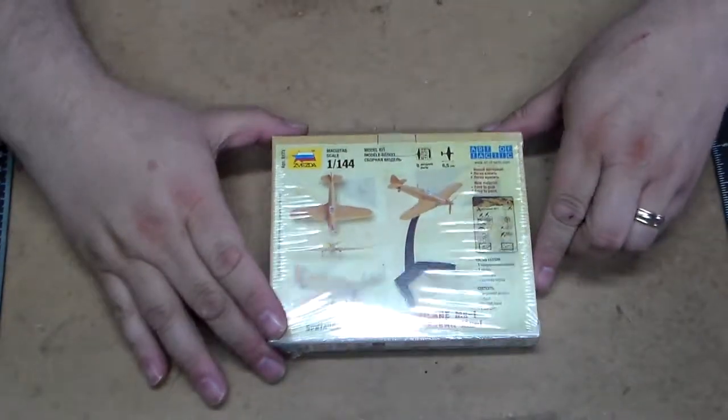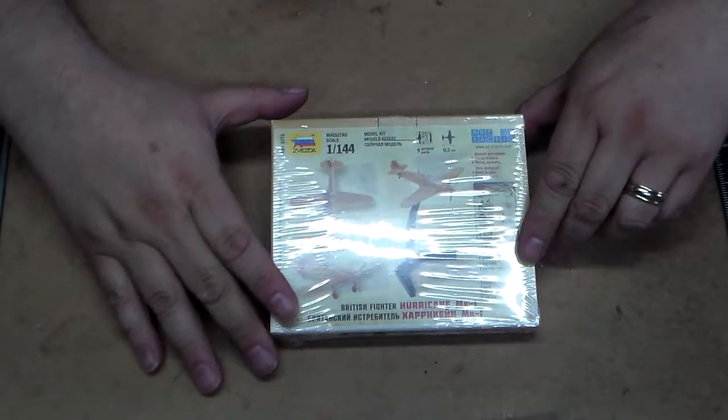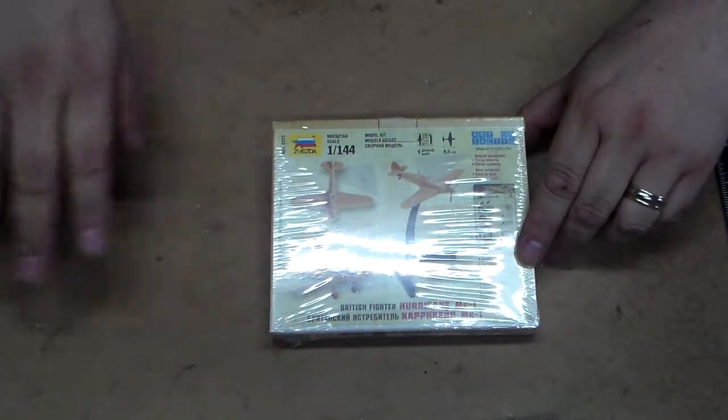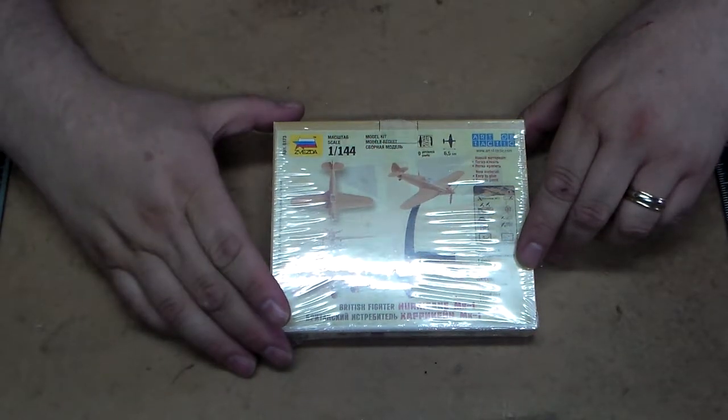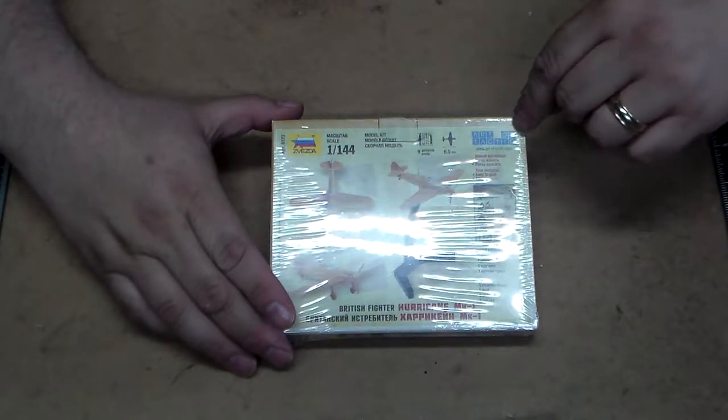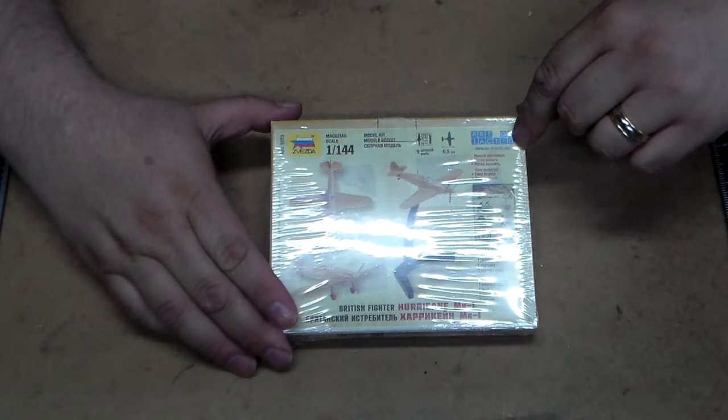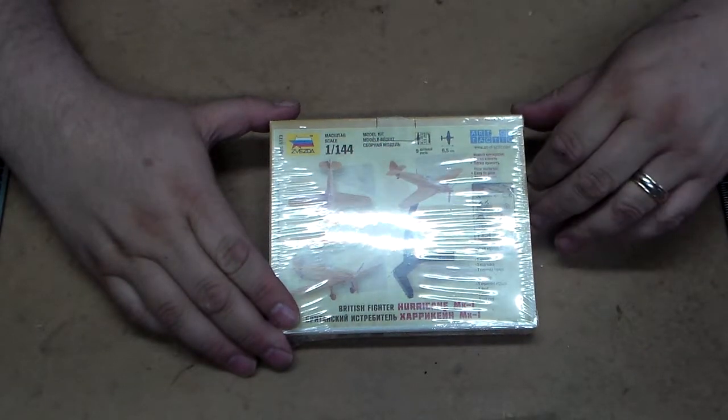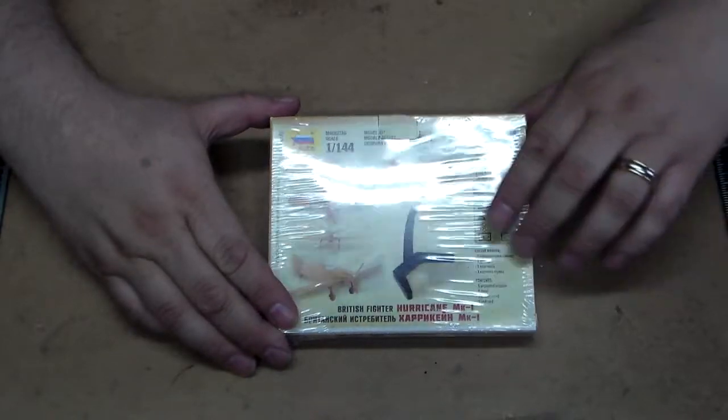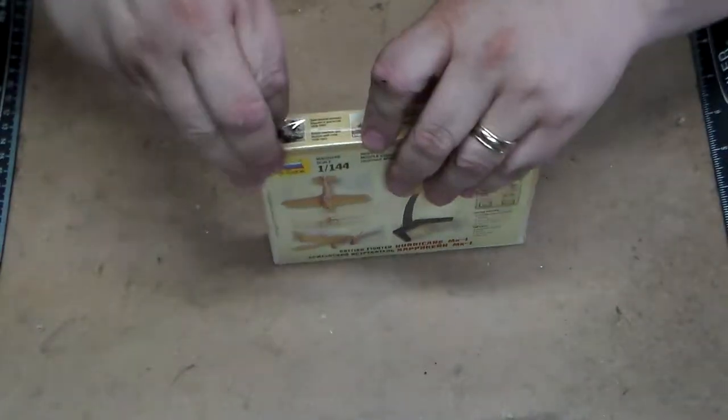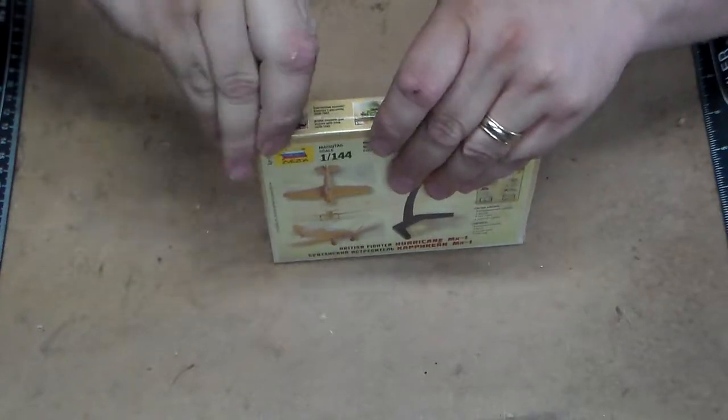On the back of the box it shows you basically what the model will look like. It does include a flight stand in there and of course the model does come unpainted. And also it is part of the Art of Tactic game system that the Russian company has developed and it would also maybe include the card in there. Well, let's take a look on the inside and see what we've got in there.